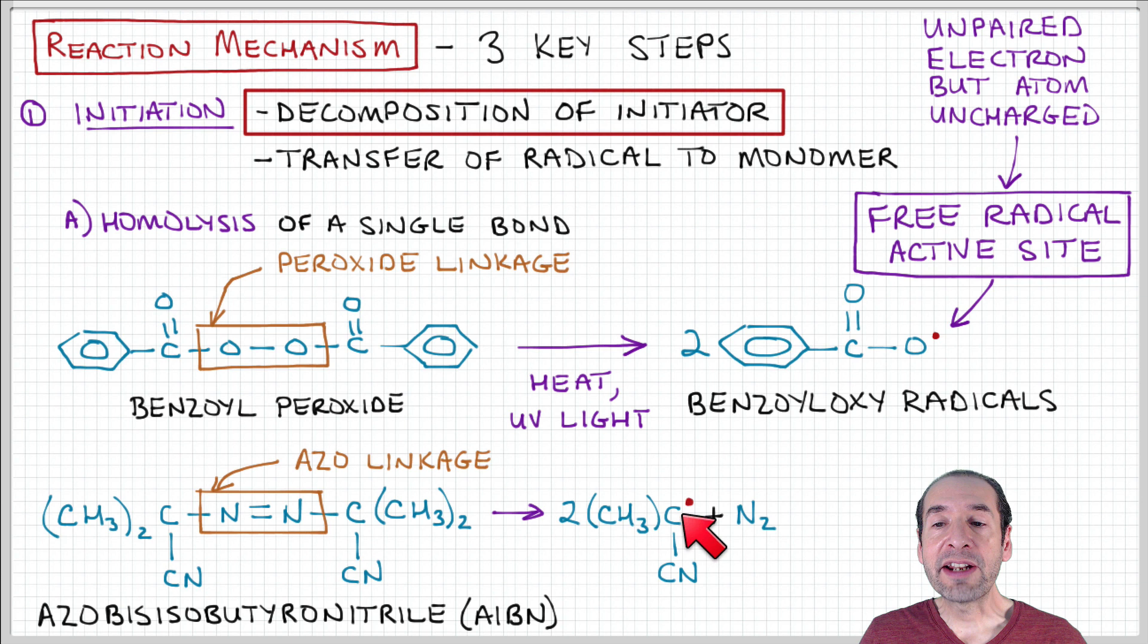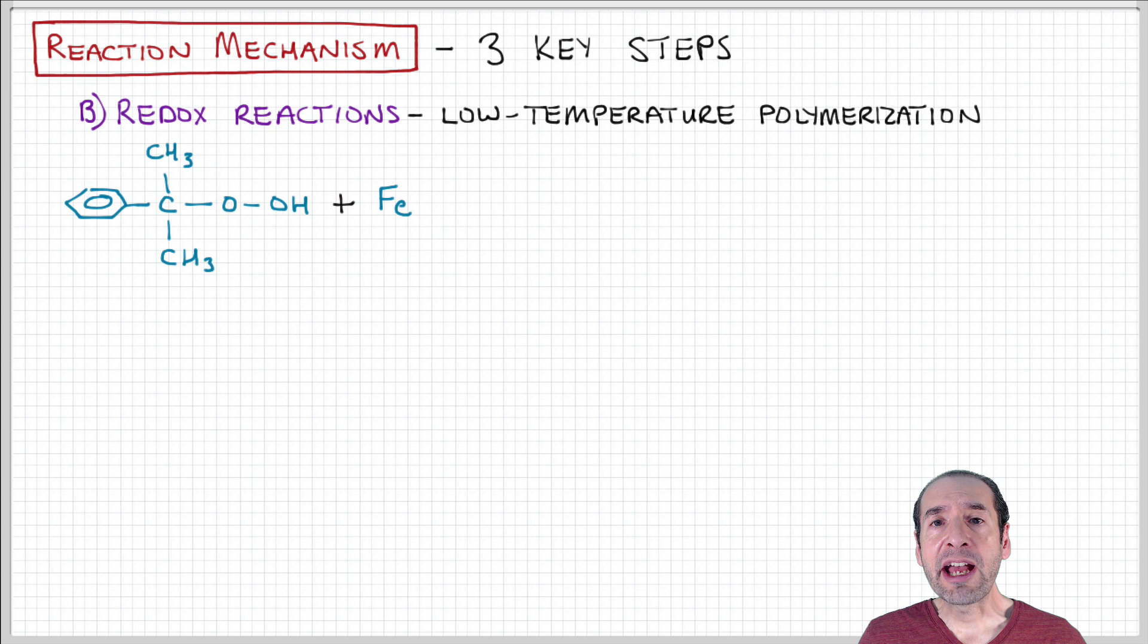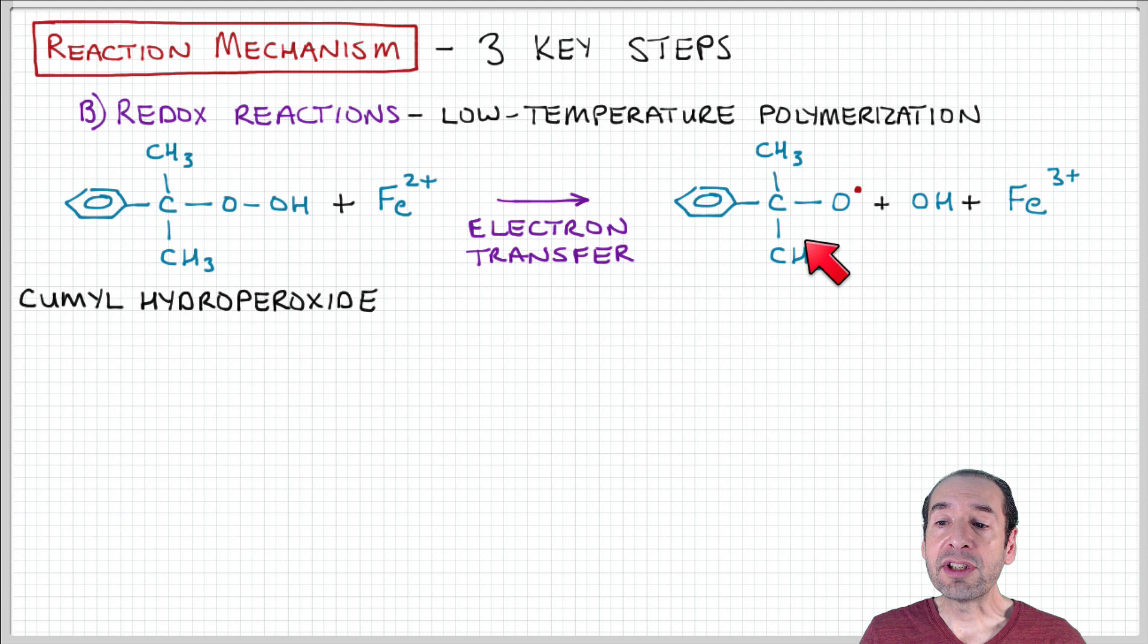So these processes where a bond is broken to create this active site are called homolysis processes. There's another class of processes that can be used to form these free radical active sites, and these involve redox reactions. These aren't as common. They're often used in situations where it's desirable to have the process take place at a lower temperature. So for example, this cumyl hydroperoxide could experience an electron transfer reaction to produce a radical group and additional charge transferred to this iron atom, which would generate this free radical active site.